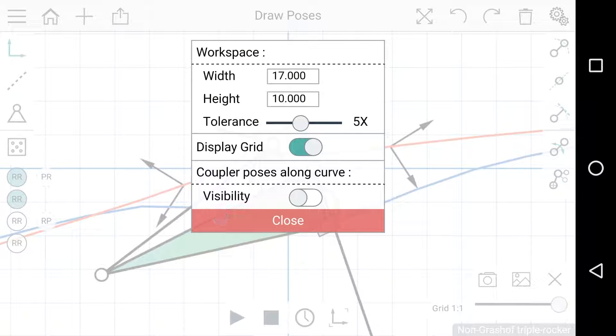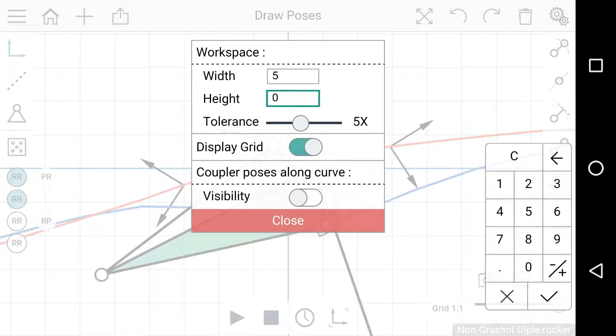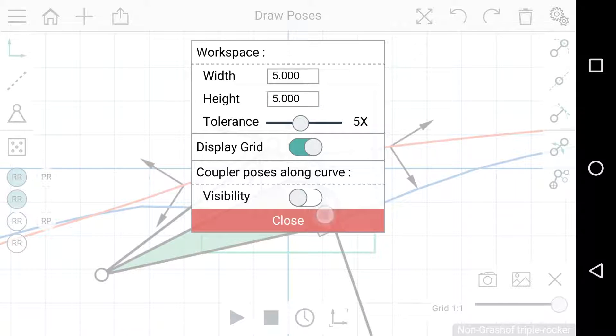There are a few settings here and the first thing you can see is the width and height of the workspace. This can be changed to say 5 by 5 and you can see that the green rectangle that represents the workspace has become smaller.